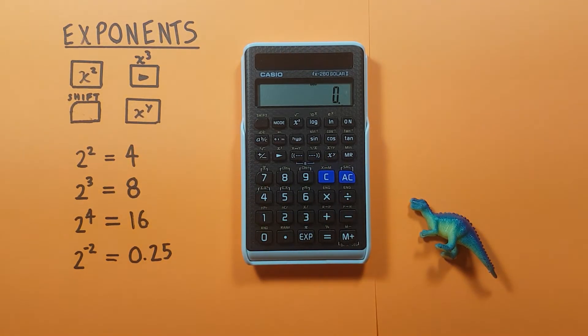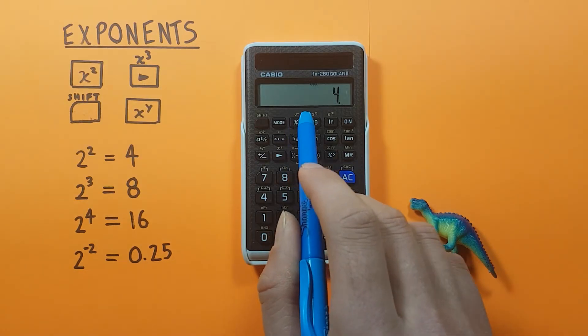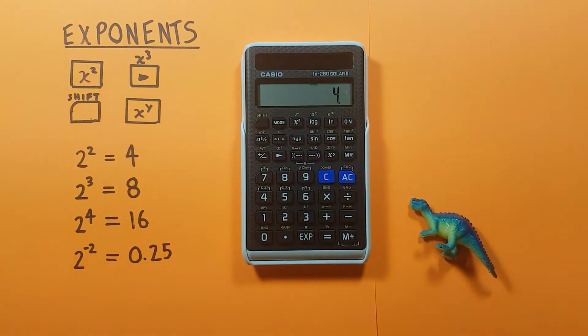Alright, to simply square a number we place the number on the screen and then press the x to the power of 2 key and we get the result of 2 to the power of 2 equals 4.